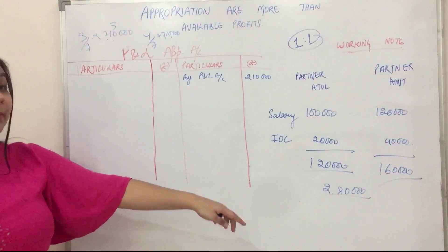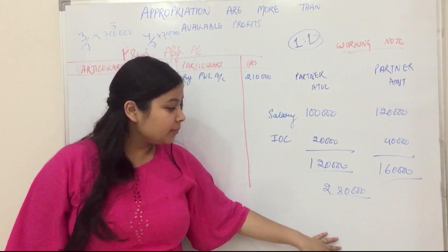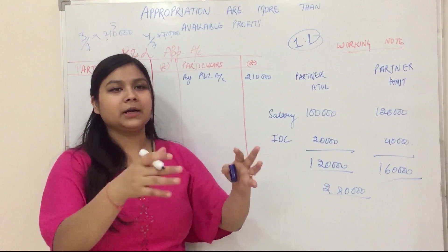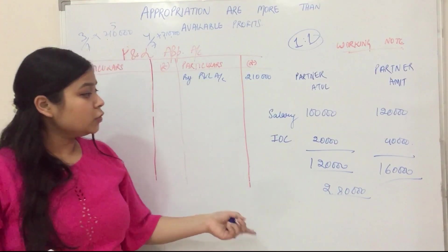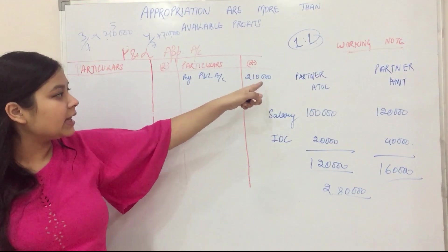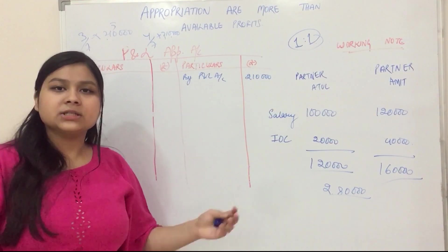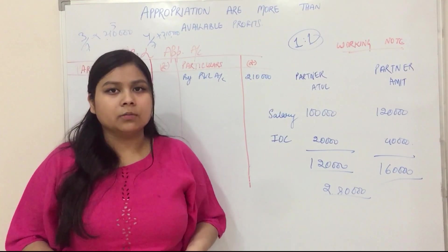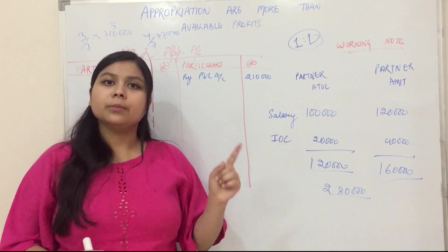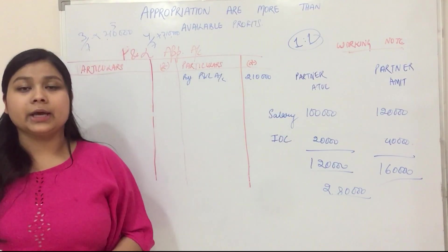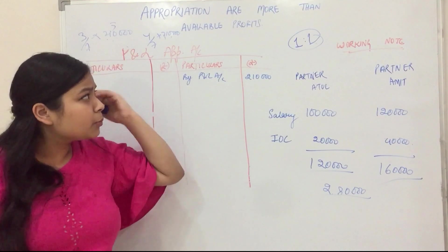So this is our actual amount which we have to give our partners. But how much do we have? 2,10,000. So we will be 70,000 short. We will distribute as much as we have. How much? Profit sharing ratio.